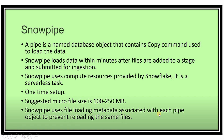Snowflake uses loading metadata associated with each pipe object to prevent reloading the same files. For example, if a file has already been loaded into Snowflake tables, when you upload a new different file, only the new file's data is loaded. The previous file will not be reloaded because Snow Pipe tracks metadata per pipe object to prevent duplicate ingestion.